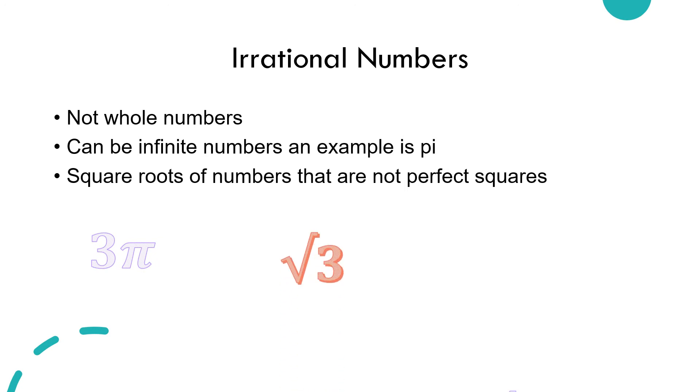So we have 3 over pi, square root of 3, negative 4 over pi. Let's do a quick check in.